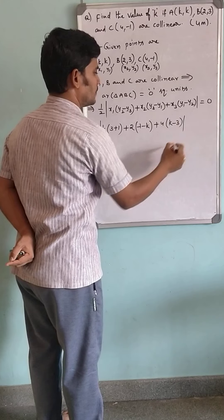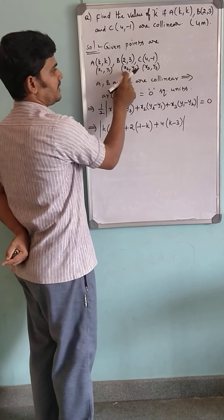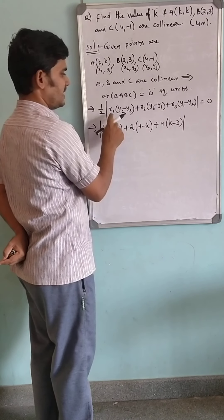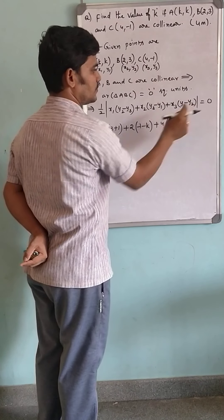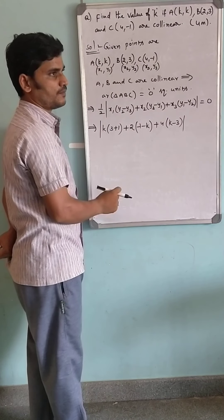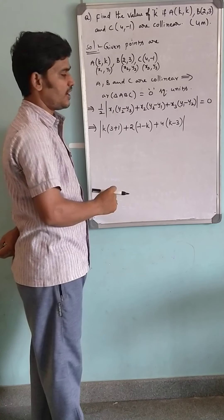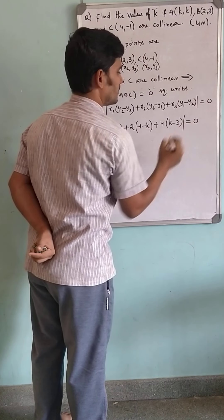See, you have to take X1, X2, X3, Y1, Y2, Y3 in a cyclic way. X1, Y2, Y3; X2, Y3, Y1; X3, Y1, Y2. The formula is having some rhythm. You have to find that rhythm.